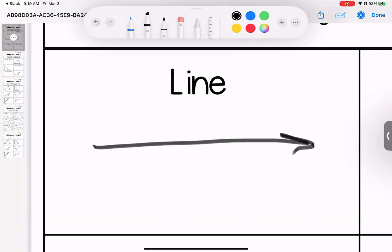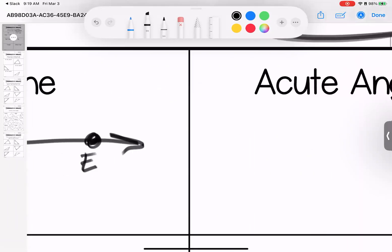A line is a double arrow. It goes on forever in both directions. We're going to give it two points, and I'm going to call it D-E. Remember, we can pick anything to label our points.